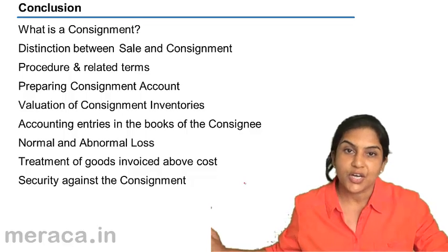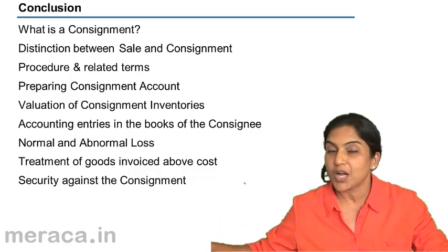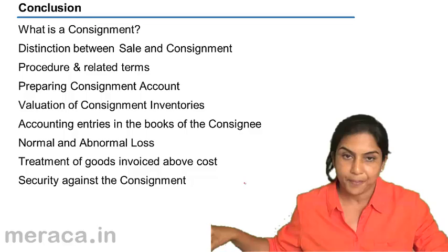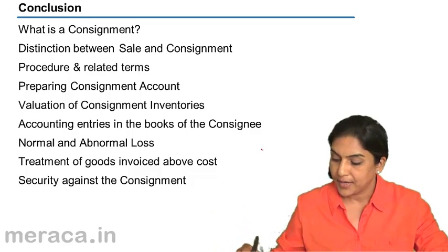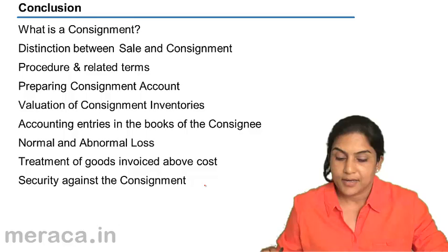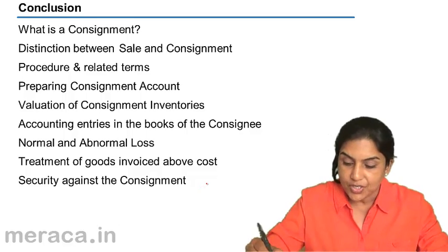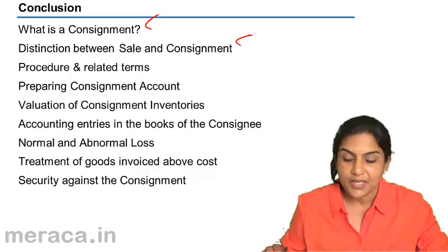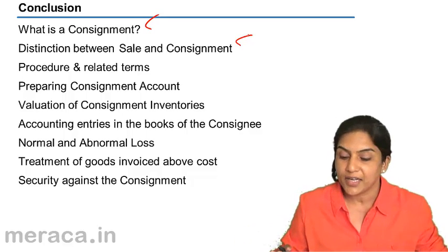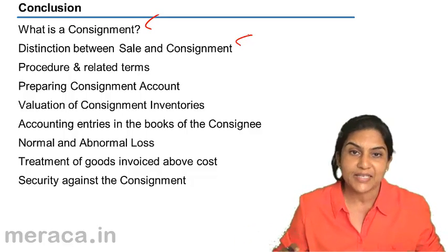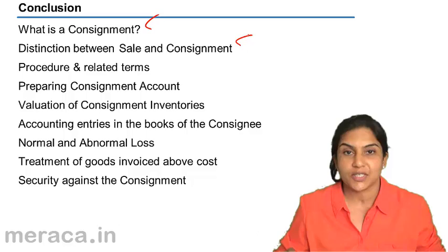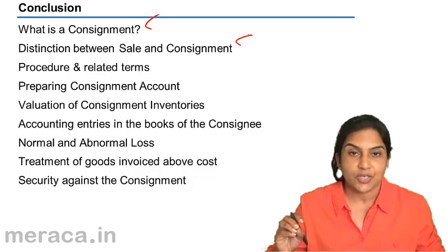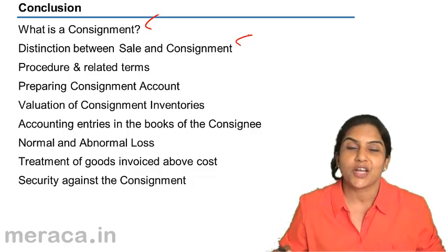The goods are called consignment. There is a distinction between sale and consignment, and we went on to identify the differences. The basic difference is that when goods are sent on consignment, there is no transfer of ownership of the goods.